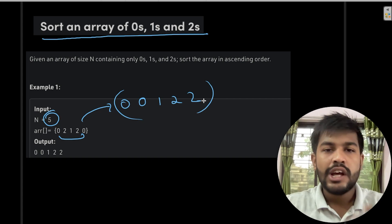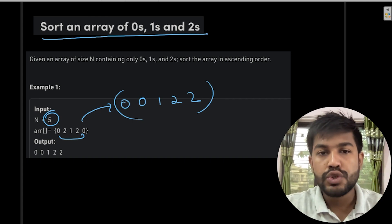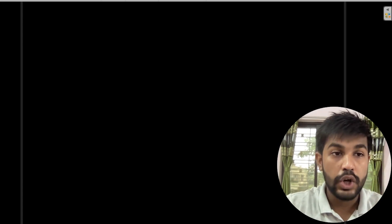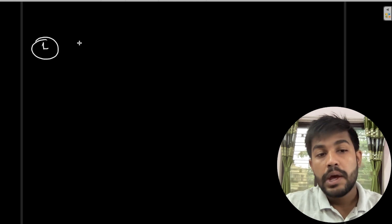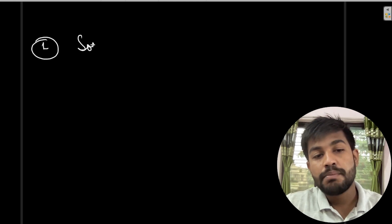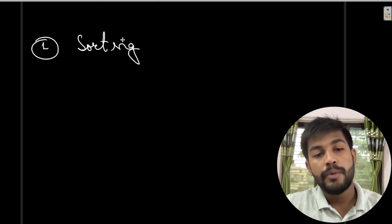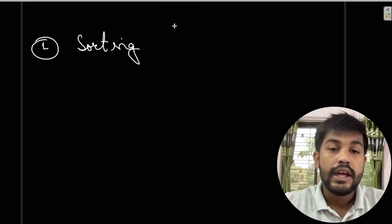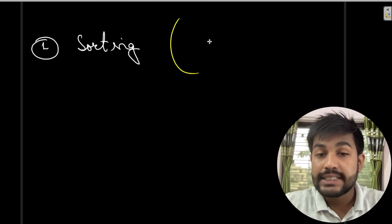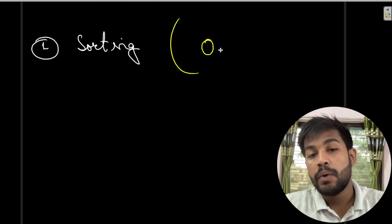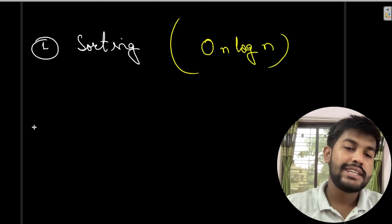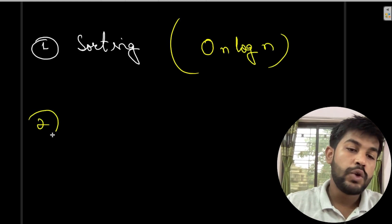The first brute force approach is simply sorting the array. If you use merge sort or quicksort algorithm, the time complexity would be O(n log n).